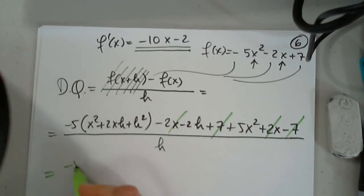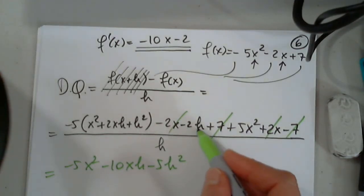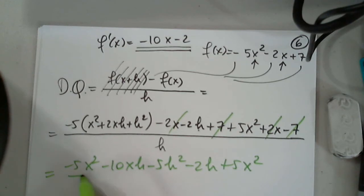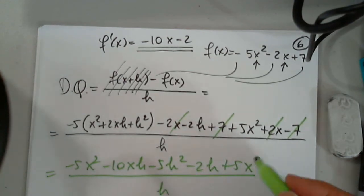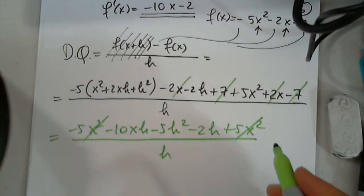Now, I distribute negative 5. Negative 5x squared, negative 10xh minus 5h squared. Then I copy negative 2h and positive 5x squared, everything divided by h. And these two also, as expected, go away.